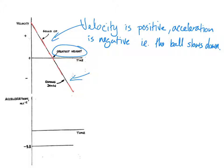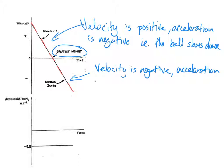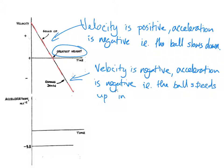On the way down, if we look at this section, the velocity values are now negative. The acceleration due to gravity is still negative 9.8, but because these are both acting in the same direction the ball speeds up in a negative direction — i.e. downward.